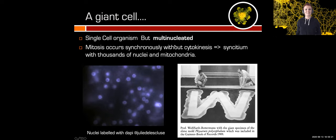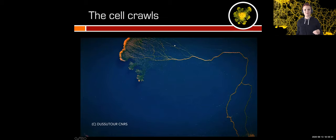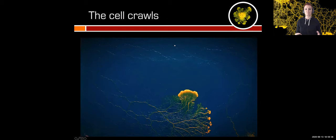Here is a slime mold crawling in its environment, because slime molds are moving around. This is a video that has been sped up, because in fact the slime mold reaches speeds of one centimeter per hour on average, and sometimes a maximum speed of four centimeters per hour.